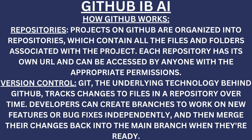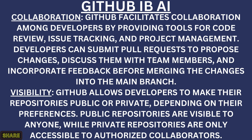Version control: Git, the underlying technology behind GitHub, tracks changes to files in a repository over time. Developers can create branches to work on new features or bug fixes independently, and then merge their changes back into the main branch when they are ready. Collaboration: GitHub facilitates collaboration among developers by providing tools for code review, issue tracking, and project management.